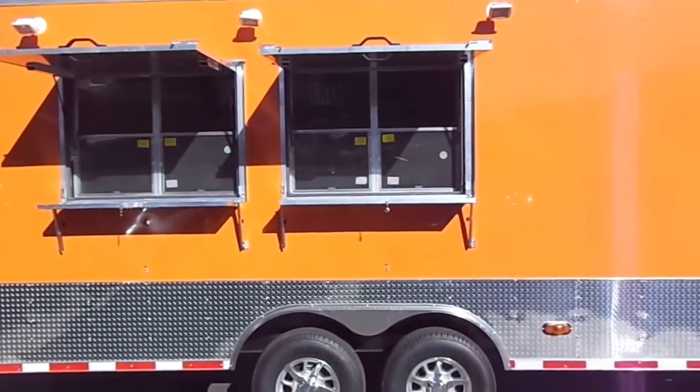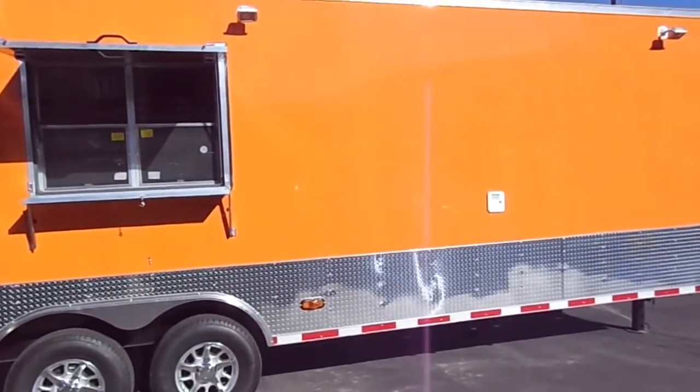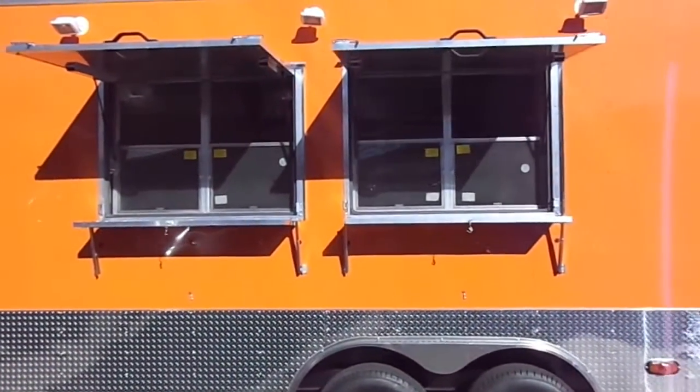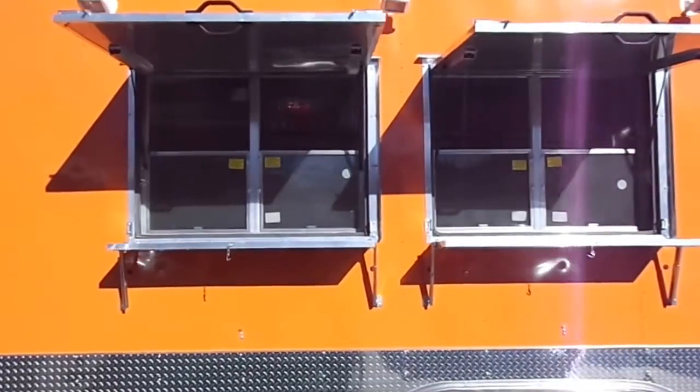It is orange in color with a 24-inch stone guard, the ATP stone guard. It has two four-foot concession windows with glass and screens and flip-up counters.